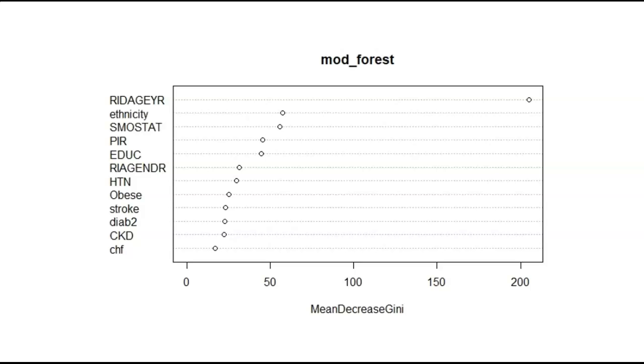These are all of the predictors that were within the model for depression. As you can see, there's about 11 predictors. Out of these, you can see CHF, congestive heart failure, is at the bottom of the list, while age, ethnicity, smoking status, and the two variables that we're really interested in trying to find out is, of course, hypertension.